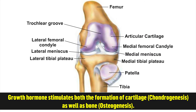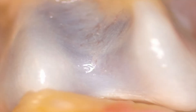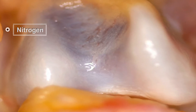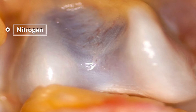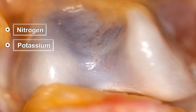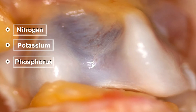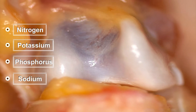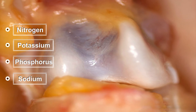Growth hormone stimulates both the formation of cartilage, i.e. chondrogenesis, as well as the bone. It causes the retention of minerals such as nitrogen, potassium, phosphorus, sodium, etc., which are useful for growth.